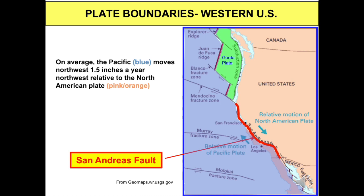Continual stresses result from these differing plate motions. Stresses are occasionally released as strain during earthquakes. But the stresses also result in the landforms you see — east-west-oriented mountains and valleys in California's transverse ranges.